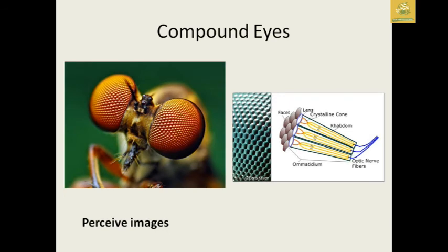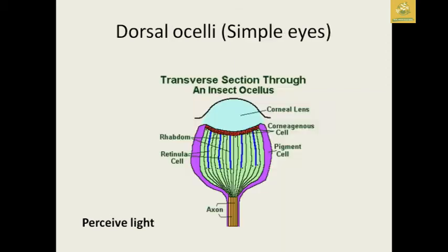The compound eye is made up of outer coverings called facets, with a lens in between and the ommatidium as the inner part, which connects to the nerve cord. The rhabdom is a nerve that connects the optic nerve and the eye node. The crystalline cone converts images and transfers them to the brain — that is how the compound eye works.